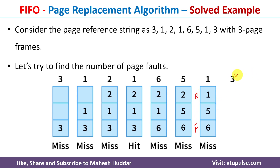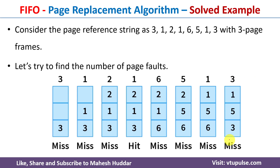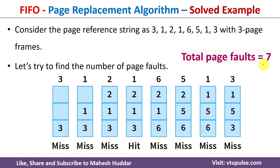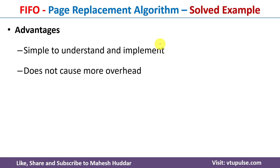The next reference is for page number 3. It is not present in primary memory, so 6 will be replaced with 3. We have now satisfied all the page references of the given process. Counting the results: 1, 2, 3, 4, 5, 6, 7 — there are a total of seven misses, or page faults, for the given page reference string.